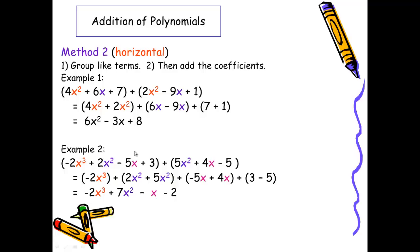Again, you probably don't have room for example 2 on your notes, though you should have included example 1. But this is done the same way. We would group the like terms. -2x³ is the only third degree term. We then have 2x² + 5x² grouped together. -5x and +4x are grouped. And then 3 is grouped with -5. And when we combine the like terms, we get -2x³ + 7x² - x - 2.